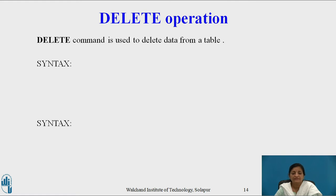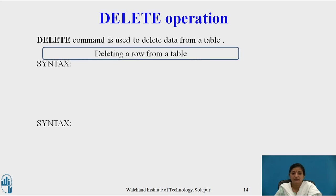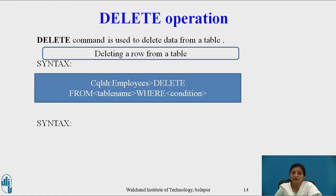Now let's see the last operation: the DELETE operation, which is used to delete data from the table. There are different types of deletion. The first is deleting a row from the table, with syntax: DELETE FROM table_name WHERE condition, where WHERE is used to select one or more rows for deletion.